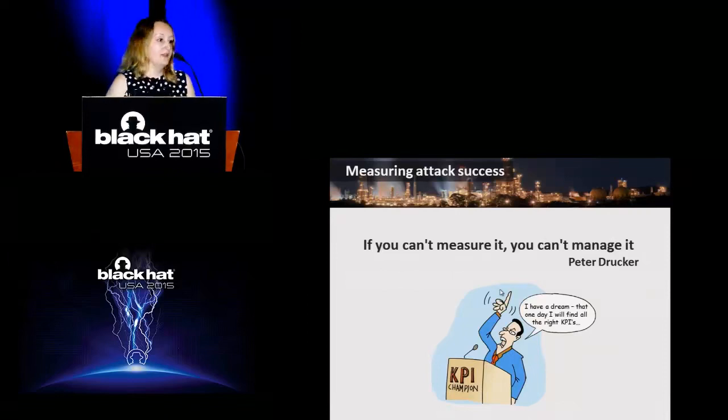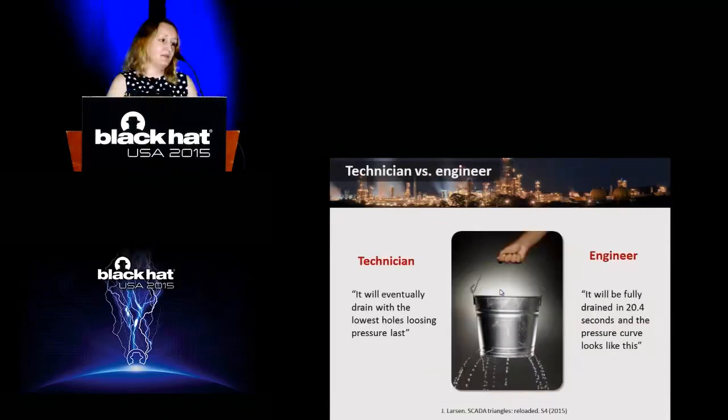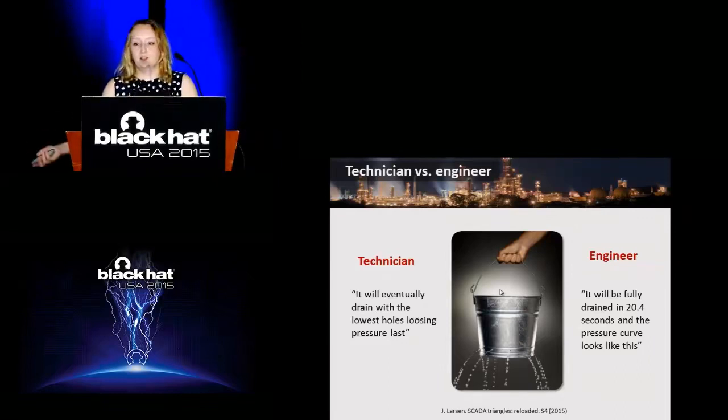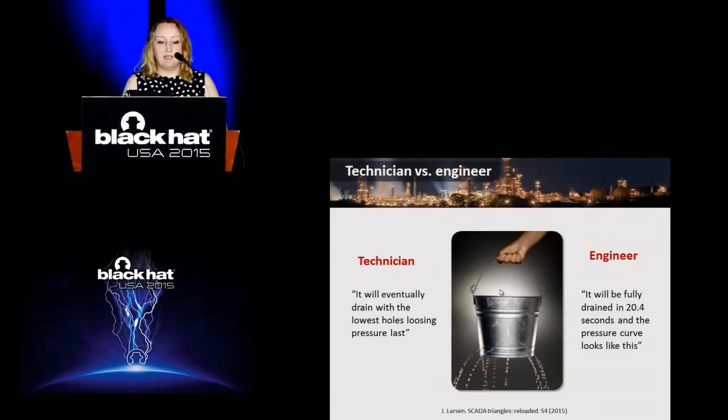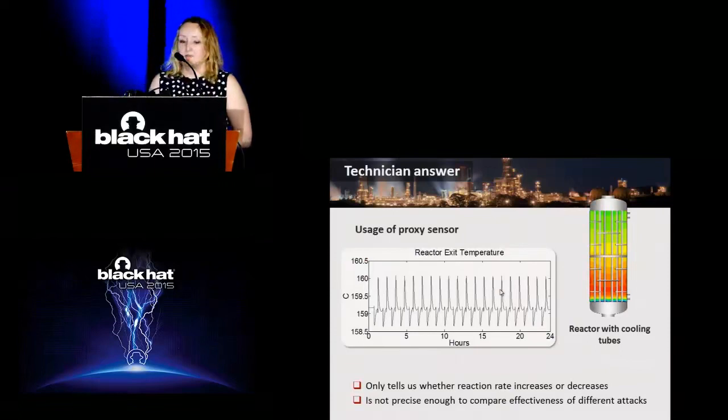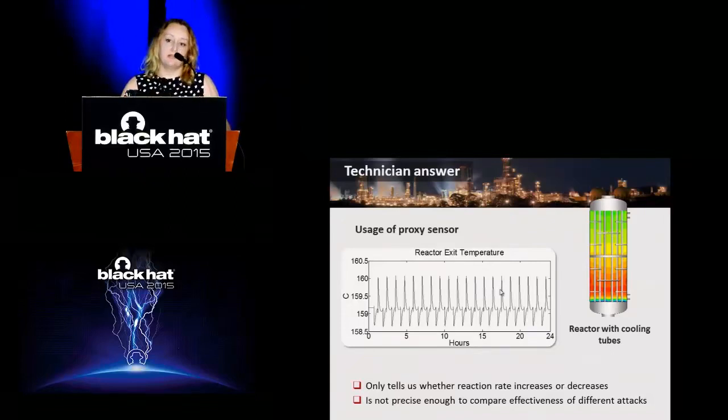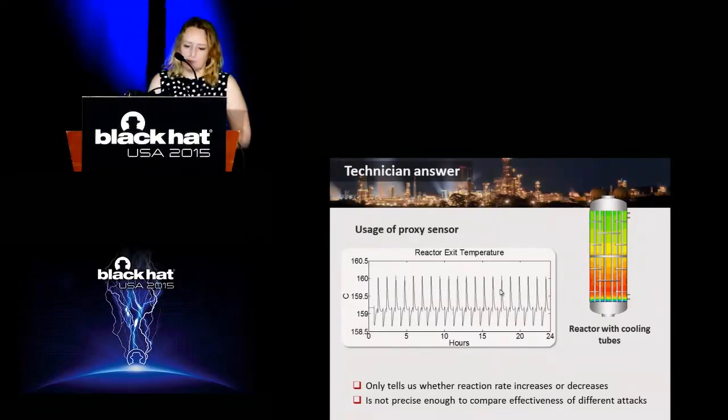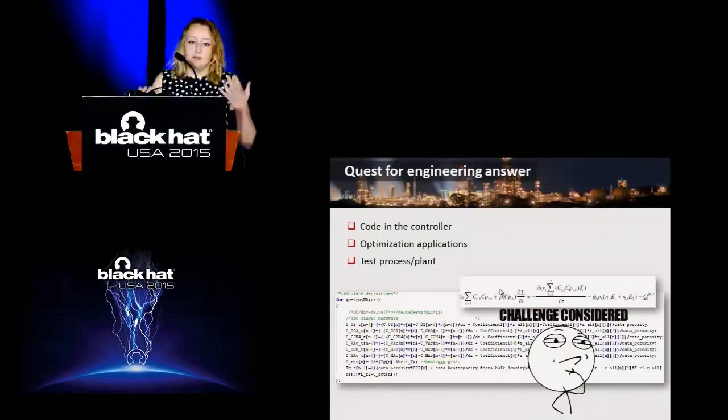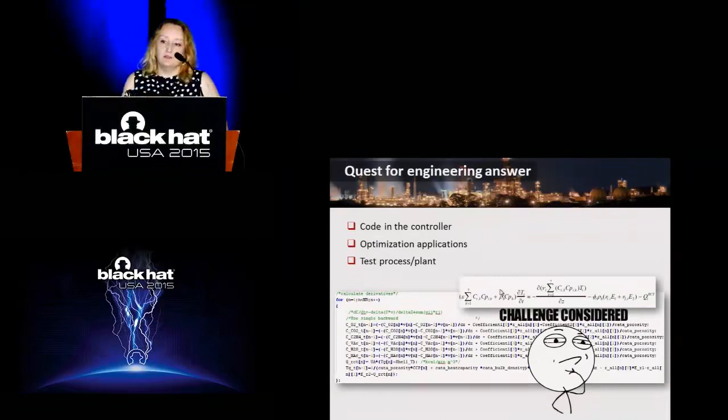I was looking for a solution, what do we do? Then I remembered another presentation of Jason Larsen. There are two answers. Everything can be measured in two terms. There's a technician answer which tells you something is increasing or decreasing, and there's an engineering answer which tells you by how much. In technician terms, we could obtain the technician answer with a proxy sensor, which is reactor exit temperature. If reactor exit temperature is decreasing, it means less reaction is happening in the reactor. It means our attack is successful. It's already a good sign, but this accuracy is not enough for us to compare the effectiveness of different attacks. We desperately needed the engineering answer. Then I had this idea. In fact, the control logic is actually very complex. There are a lot of optimization applications and computations done on the process before you issue control commands.